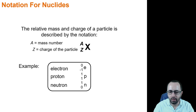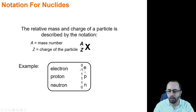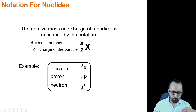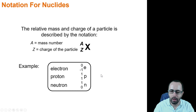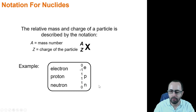For an electron, the bottom-left charge is negative one; for a proton, positive one; for a neutron, zero. The top-left mass value is zero for an electron, one for a proton, and one for a neutron. Of course, protons and neutrons have slightly different masses, and electrons do have a small amount of mass. These masses will factor into some of our calculations because we'll be looking at them very closely. But when we write balanced nuclear equations, we just use the mass number.